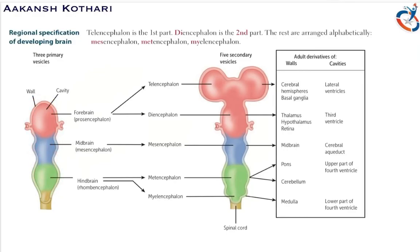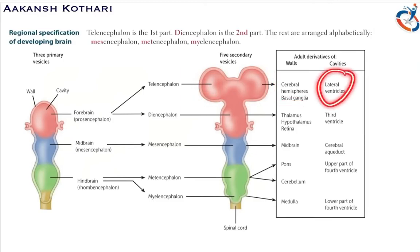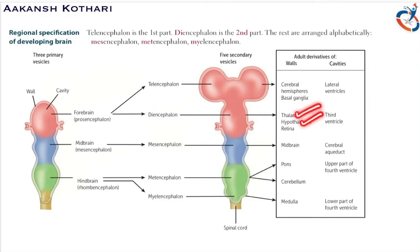The forebrain forms two structures: the telencephalon and the diencephalon. The telencephalon forms the two cerebral hemispheres and the basal ganglia, whereas its cavities form the lateral ventricles. The diencephalon forms the thalamus, hypothalamus, and retina of the eye, and its cavity forms the third ventricle.